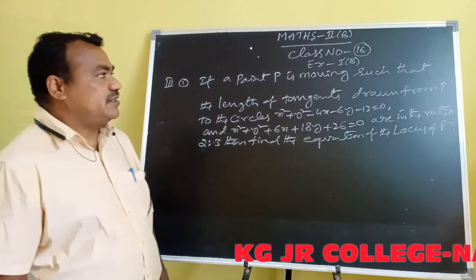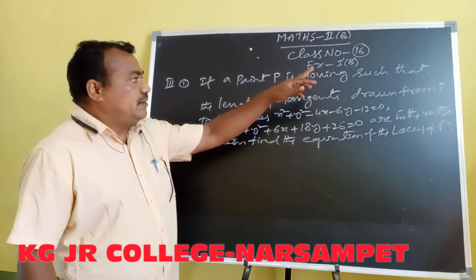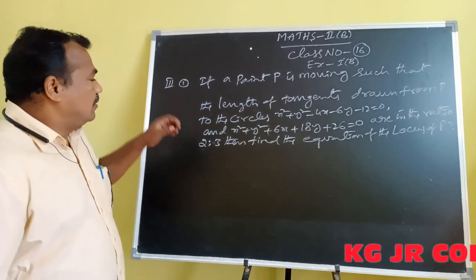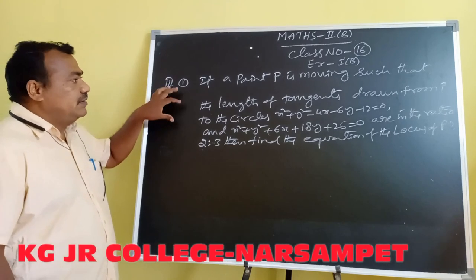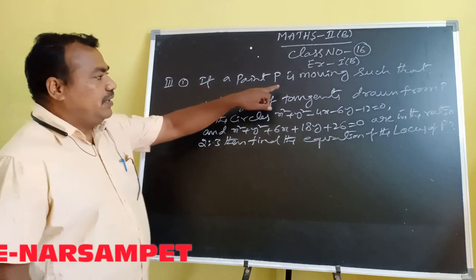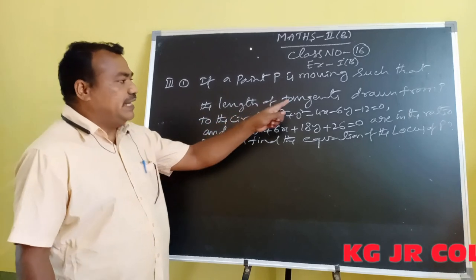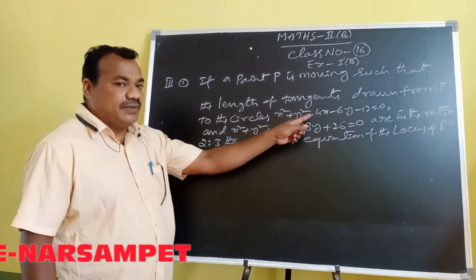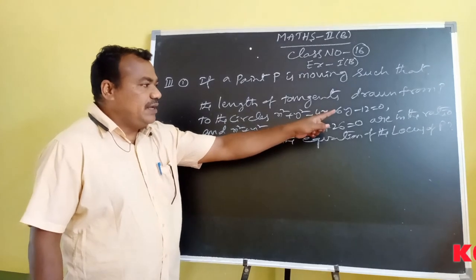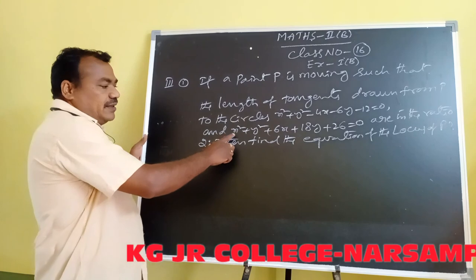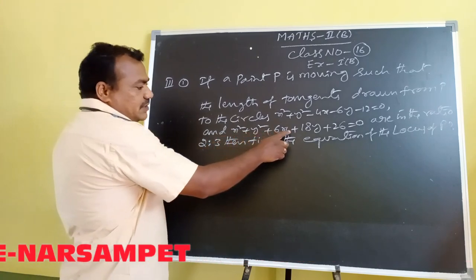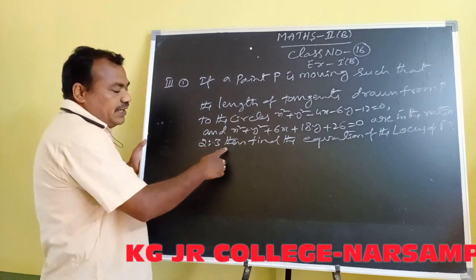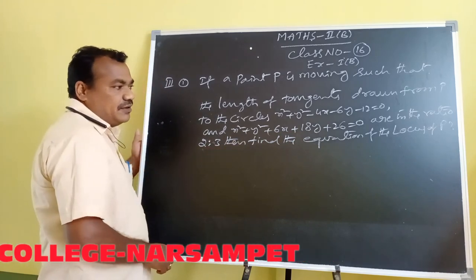Hello students, today class number 16 and exercise number 1B. This is the third row first problem. If a point P is moving such that the length of tangents drawn from P to the circle x² + y² - 2x - 6y - 12 = 0 and another circle x² + y² + 6x + 18y + 26 = 0 are in the ratio 2:3, then find the equation of locus of P.